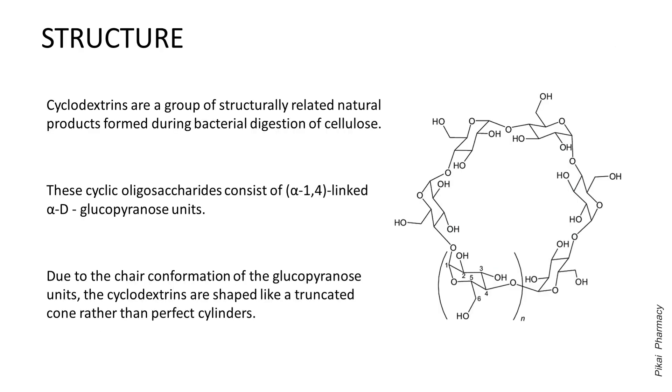Let's briefly discuss the structure of cyclodextrin. Cyclodextrins are a group of structurally related natural products formed during bacterial digestion of cellulose. These cyclic oligosaccharides consist of α-1,4-linked α-D-glucopyranoside units. Due to the chair conformation of the glucopyranose units, the cyclodextrins are shaped like a truncated cone rather than a perfect cylinder.